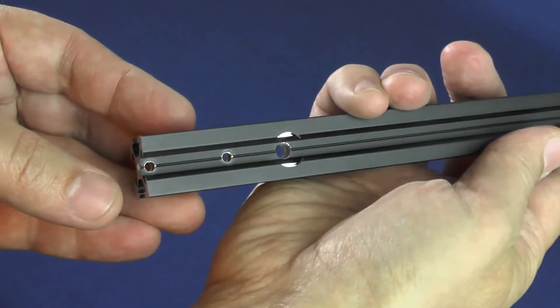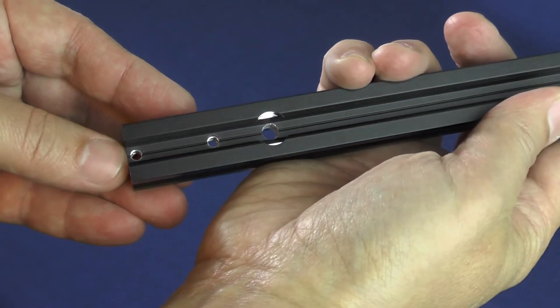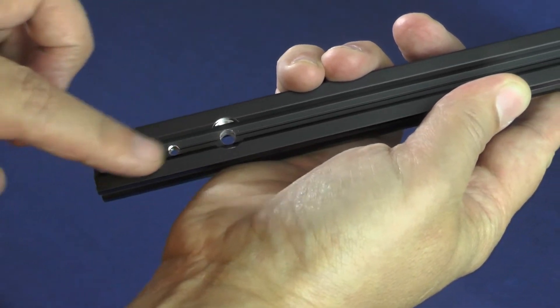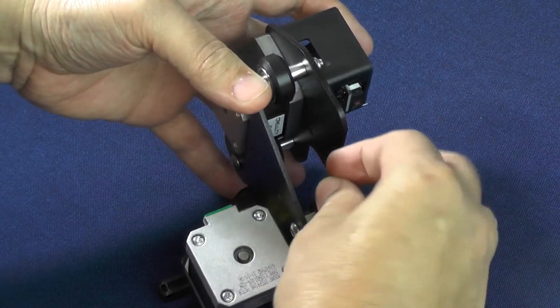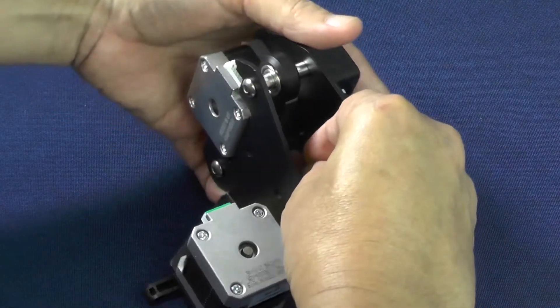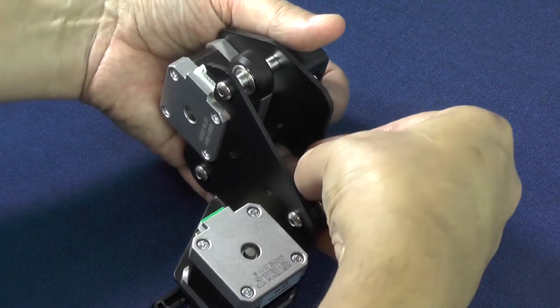We are going to work on the side of the 2020 aluminum extrusion, where the three holes are closest to the edge. You should first put the two screws into their respective holes here.